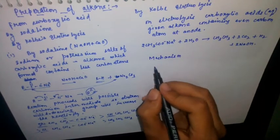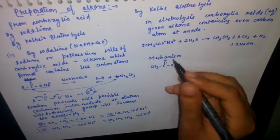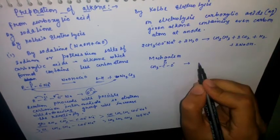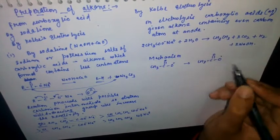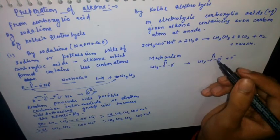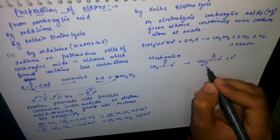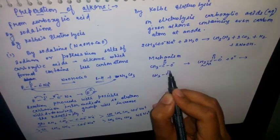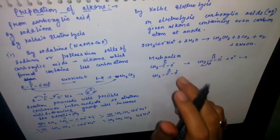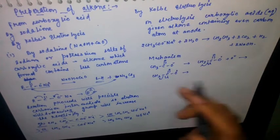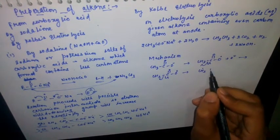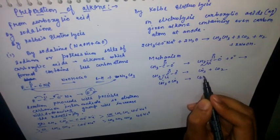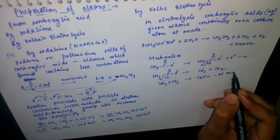Regarding the mechanism at the anode: CH₃COO⁻ loses one electron to give CH₃COO• (a free radical) plus e⁻. Then there is homolytic cleavage of the C–O bond, giving CH₃• plus CO₂. Two CH₃• radicals combine to give C₂H₆ at the anode.